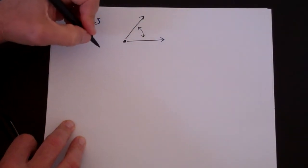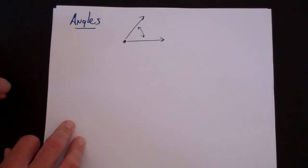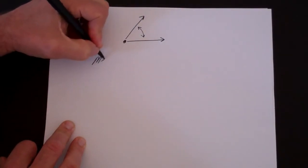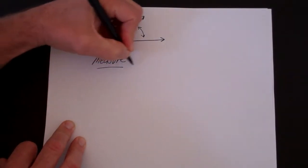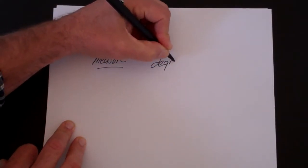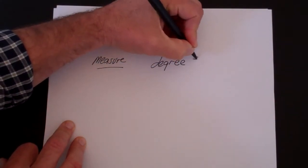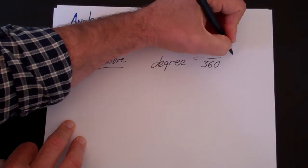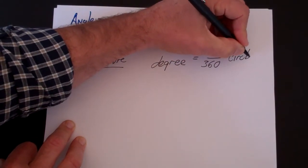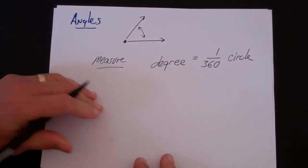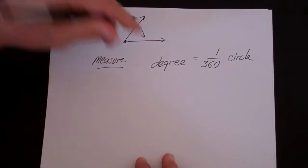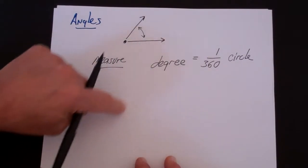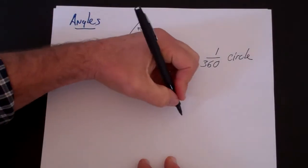If we talk about the measure of an angle, the most common way to measure an angle is with degrees. And the way that a degree is defined is the degree is defined as 1/360th of a circle. So if we think about degrees, one complete circle is 360 degrees.